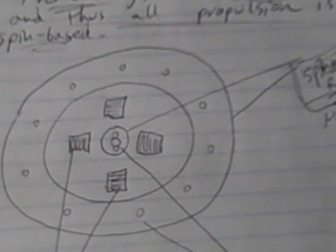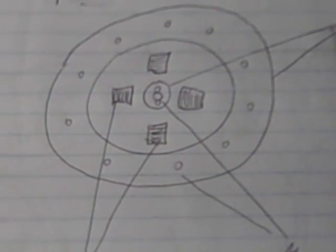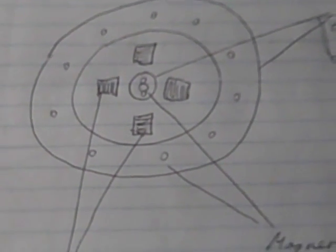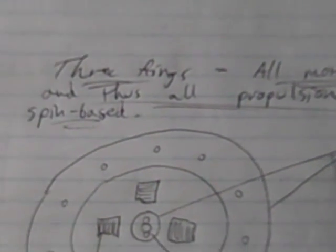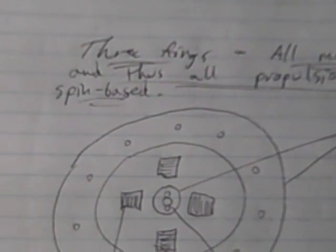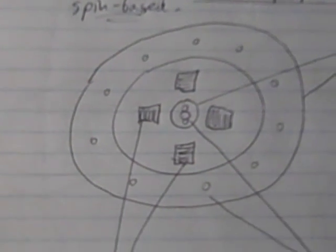I mean, there aren't UFOs, right? They don't exist. The videos I've seen are not UFOs. They're all fakes, all Frisbees. Anyway, so you have three rings. The basic principle is that all motion, and thus all propulsion, is spin-based.